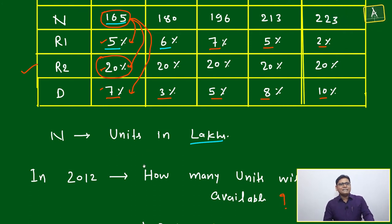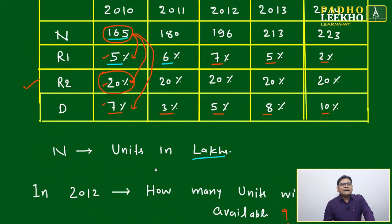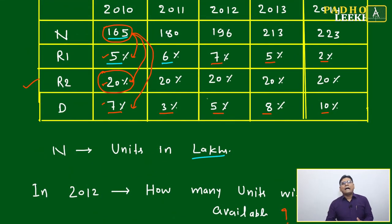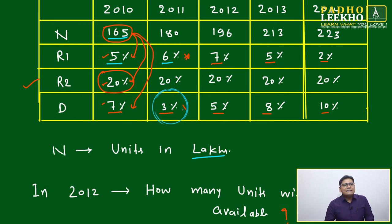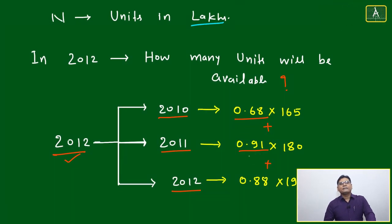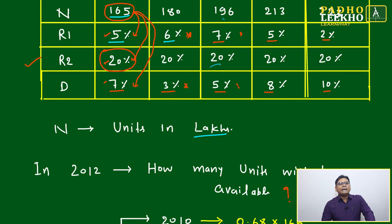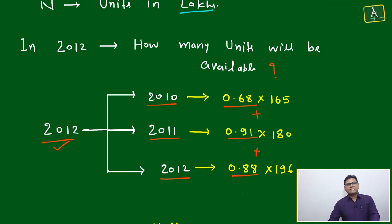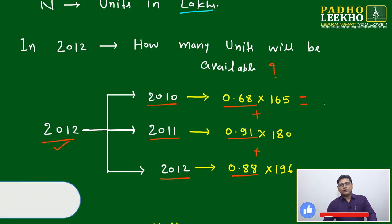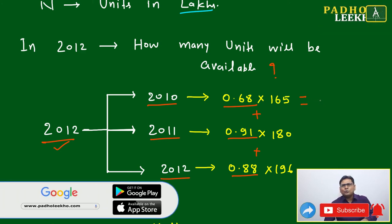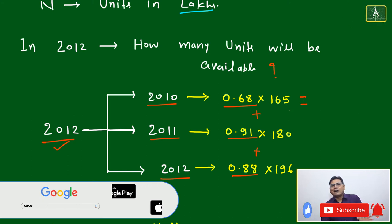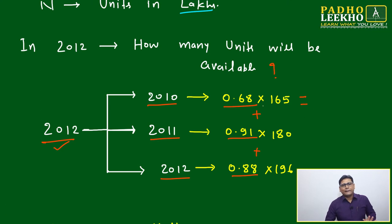For 2012's own production: R2 does not apply, so only R1 = 7% and D = 5% are deducted — 12% out, 88% of 196 lakhs remains. Applying basic math: 68% of 165 ≈ 112 lakhs; 91% of 180 ≈ 164 lakhs; 88% of 196 ≈ 172 lakhs. Using percentage-based mental math or the RD technique, this calculation takes only 30-40 seconds.